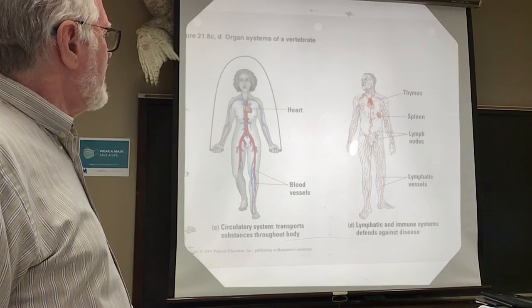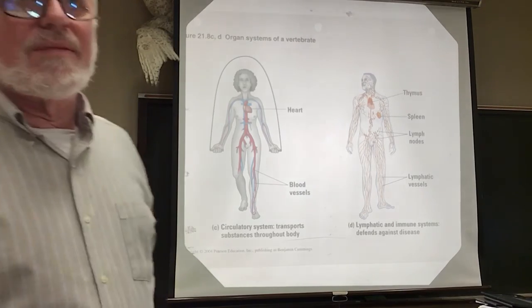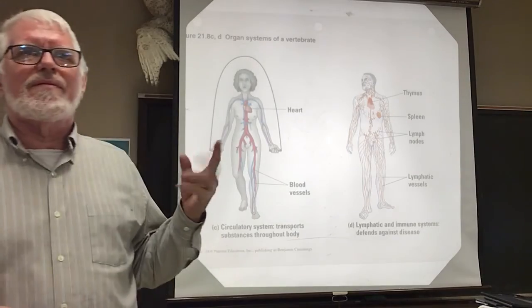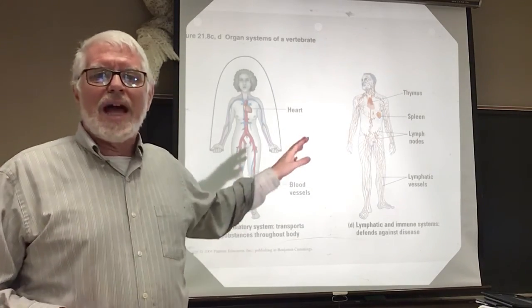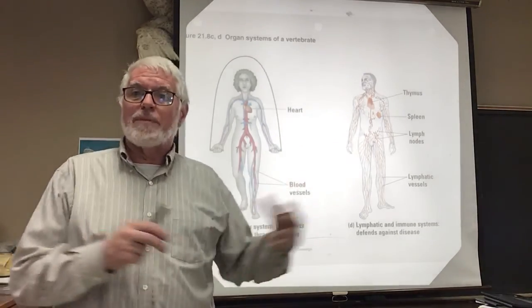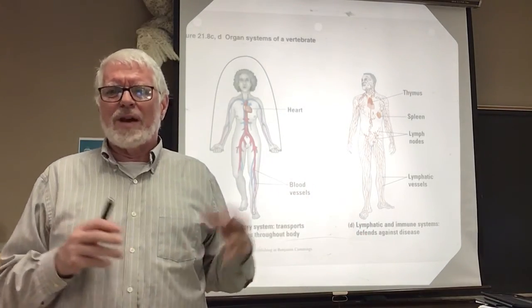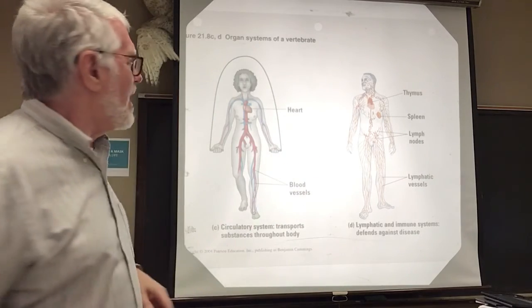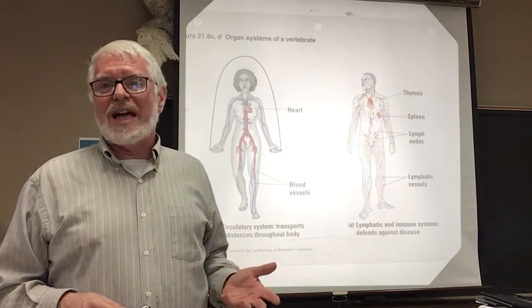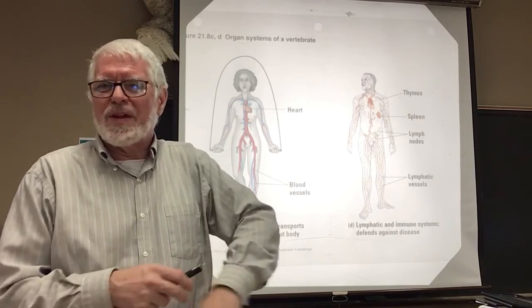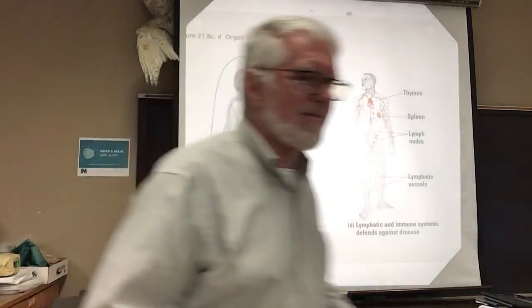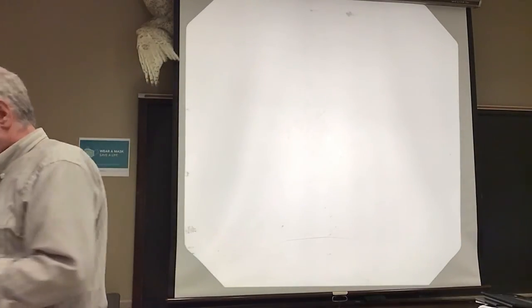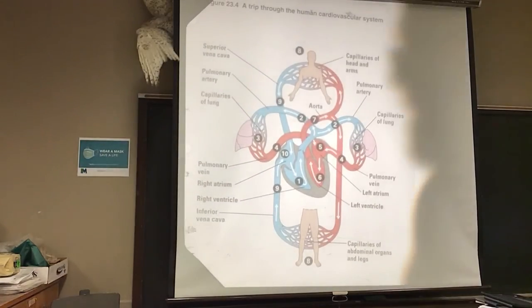In some filarial worms, they actually get into the lymph system and clog it up, causing parts of the body to incredibly swell up because fluid gets in there and can't get out. In some parts of Africa, this causes a form of what's called elephantiasis, because the swelling made people think of elephants. Now we're going to get into the circulation system.